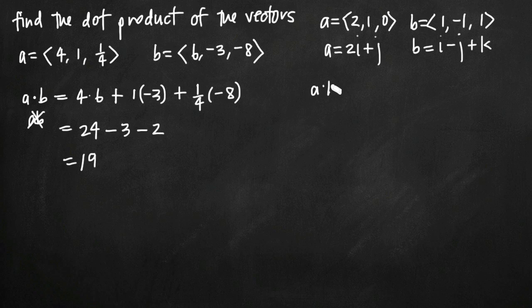And then our dot product is the same thing. a times b is equal to 2 times positive 1 plus 1 times negative 1 plus 0 times positive 1, like this. If we simplify, we'll get 2. 1 times negative 1 is a negative 1. 0 times 1 is 0. 2 minus 1 plus 0 is just 1. So our dot product of these two vectors, a and b, is just 1.